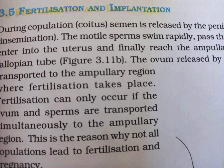This induces the completion of the meiotic division of the secondary oocyte. The second meiotic division is also unequal and results in the formation of a secondary polar body. The resulting haploid ovum — in other words, the ootid — and the haploid nucleus of the sperm fuse together to form a diploid zygote.